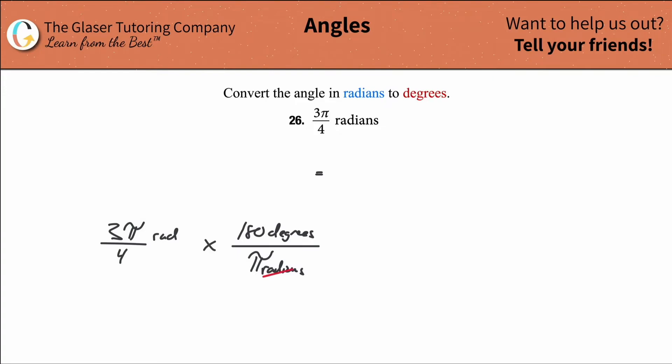So what will happen is the radians will cancel, and the unit that's left here is going to be in terms of degrees.